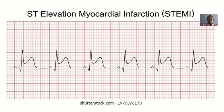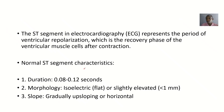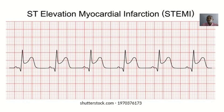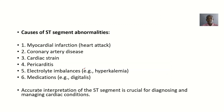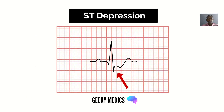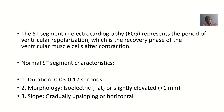We'll look at what a normal ST segment is and its characteristics, then we'll look at the abnormal ST segment. When looking at abnormal waves or segments, we usually look at the disease conditions associated with them. We'll also look at causes of ST abnormality, including causes of ST depression.